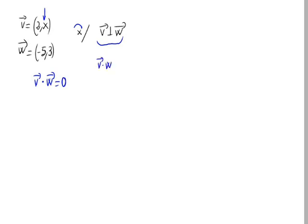In our case, the dot product of v and w is equal to 2 times (-5) plus x times 3. So this would be equal to 2 times minus 5 is minus 10 plus x times 3, that is 3x.